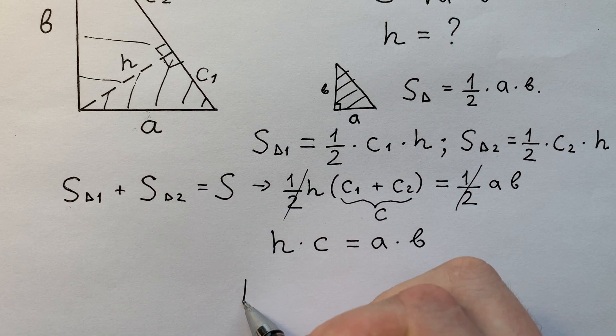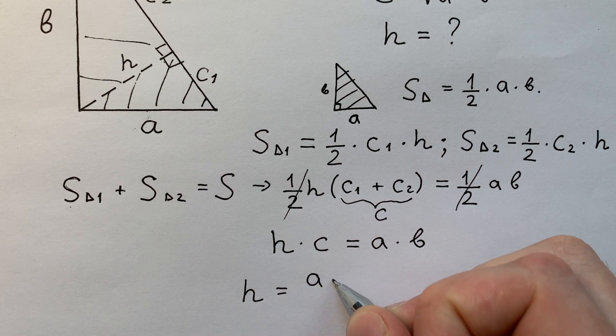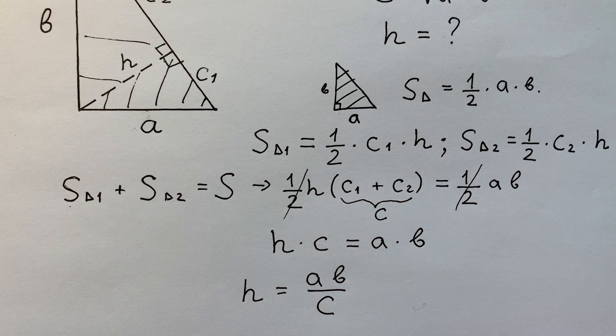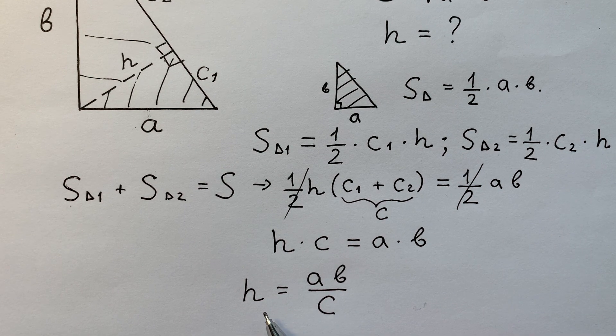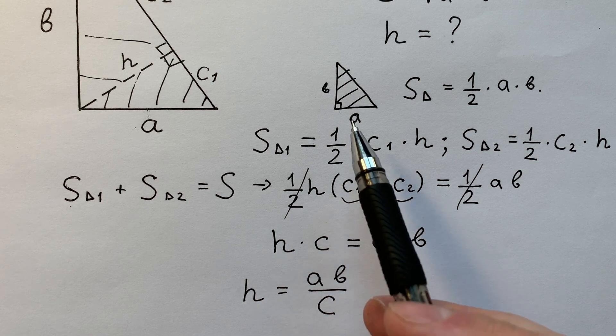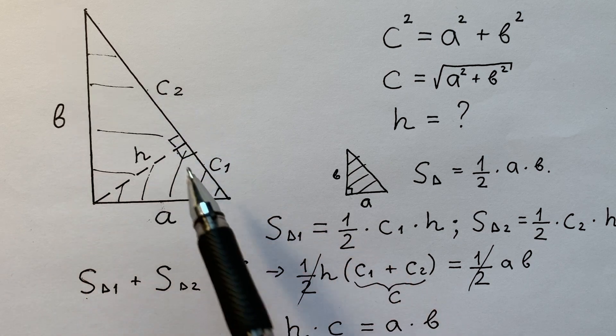And H, the height of the right triangle, equals A times B divided by C. Really cool. It's really easy to imagine. H, the height of the right triangle, equals A times B divided by C.